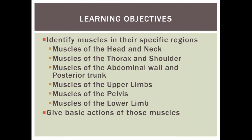So the learning objectives we went over today were to identify the muscles of specific regions such as the head and neck, the thorax and shoulder, the abdominal wall and posterior trunk, muscles of the upper limbs, the pelvis, and the lower limbs, and then give basic actions of those muscles. I hope you enjoyed this video — thank you for your time and I hope you succeed in your studies.